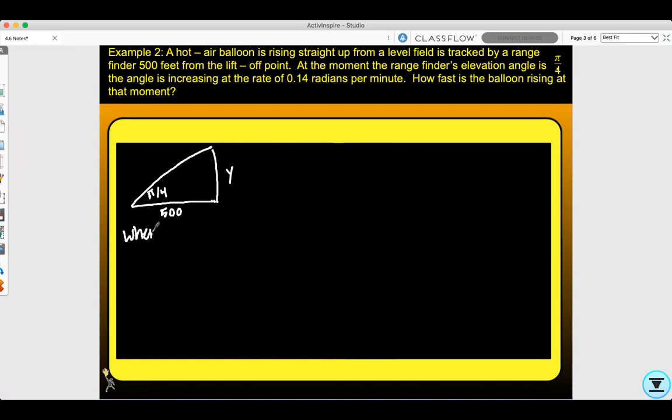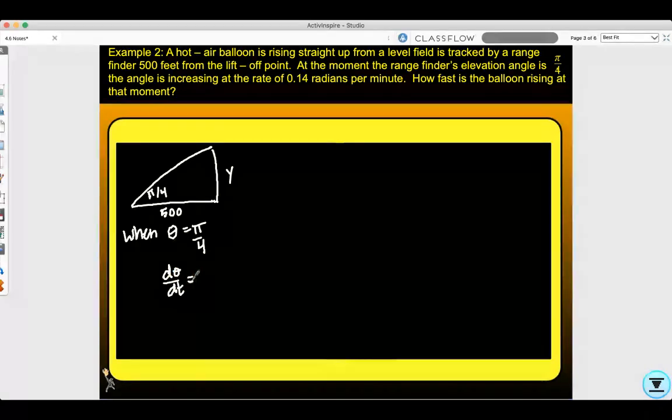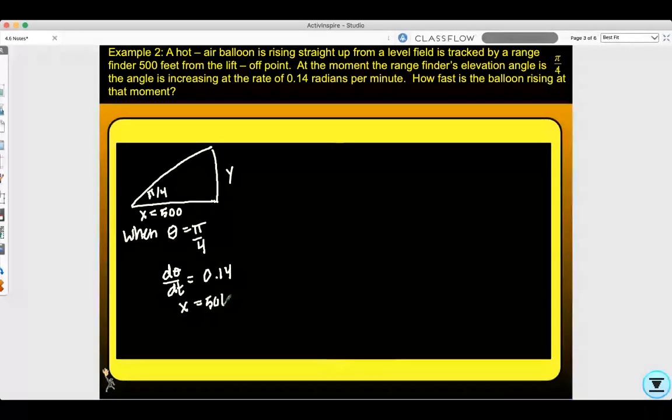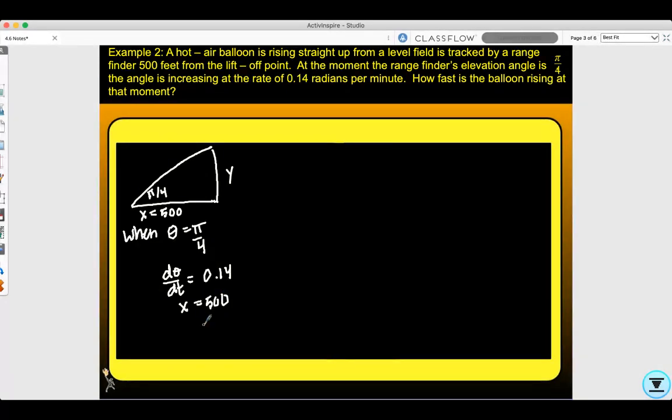They give us when θ equals π/4, we know that θ is changing with respect to time at 0.14 radians per minute. If I call the horizontal distance x, then x equals 500. They want to know what is dy/dt, how fast the balloon is rising. So dy/dt is our question mark.